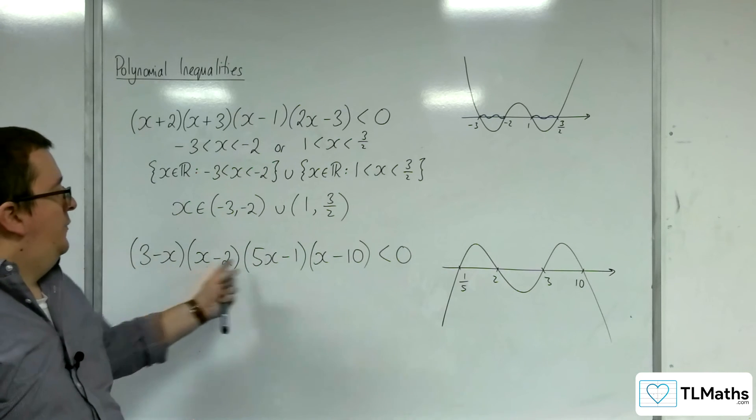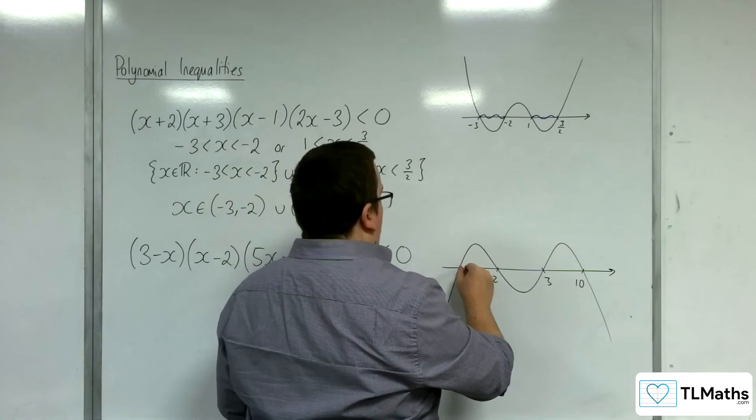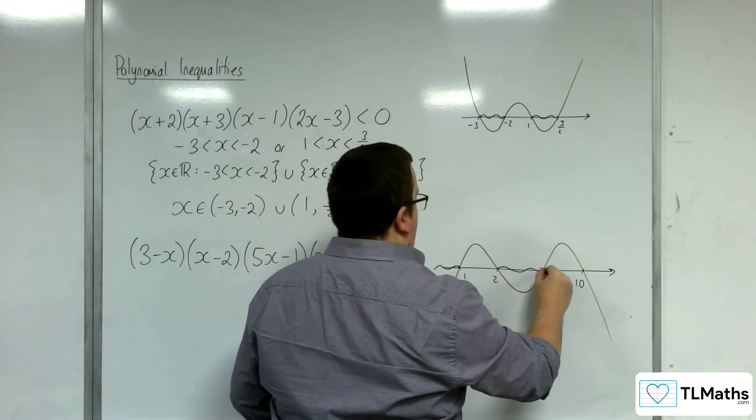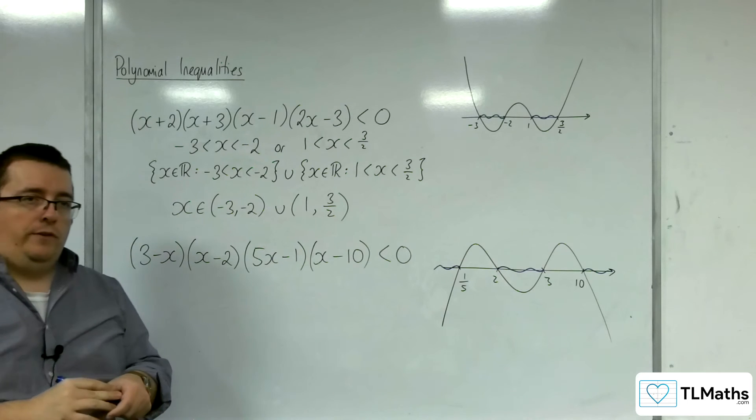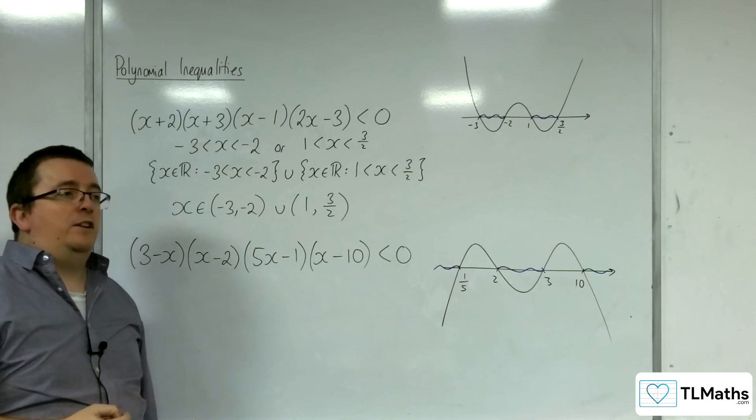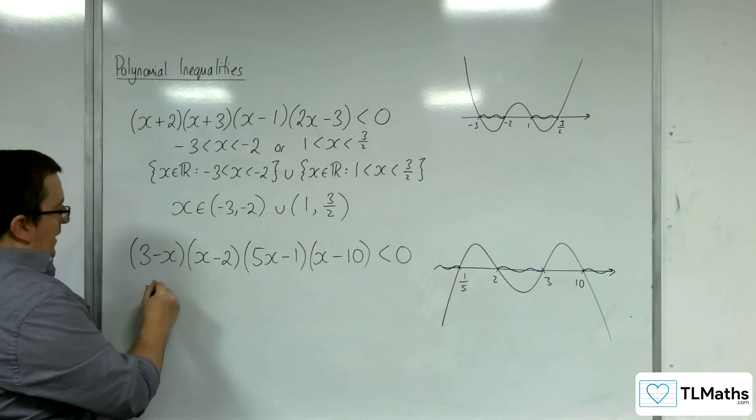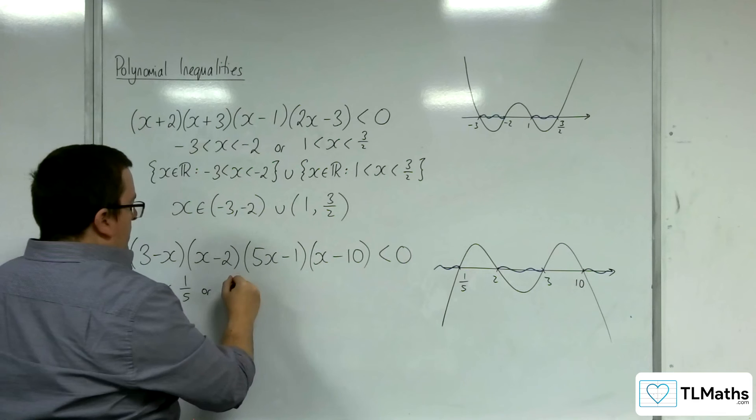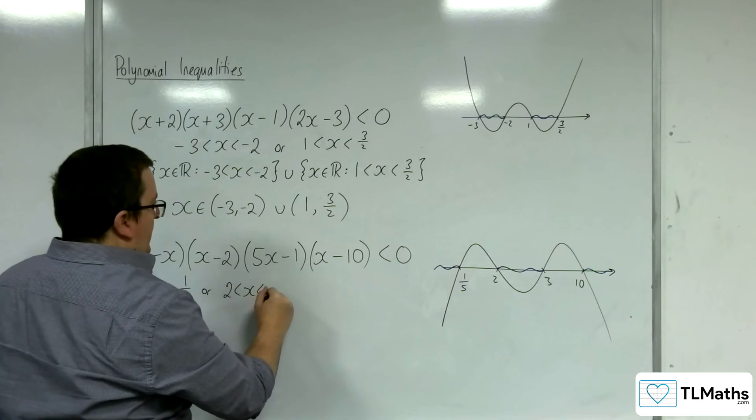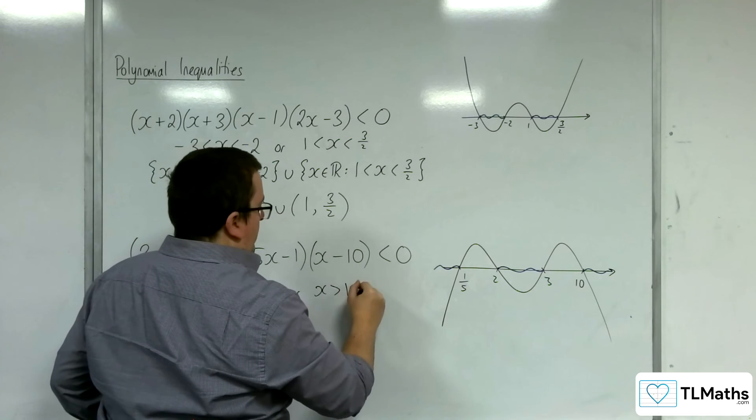So where is the quartic curve below the x-axis? Well, it's below it there, there, and there. So we've now got 3 separate regions, and that means we're going to have 3 distinct inequalities. So we've got x is less than 1 fifth, or x is greater than 2 but less than 3, or x is greater than 10.